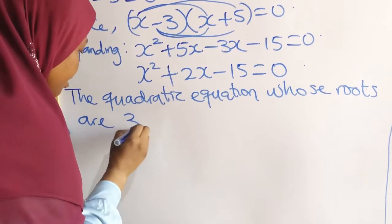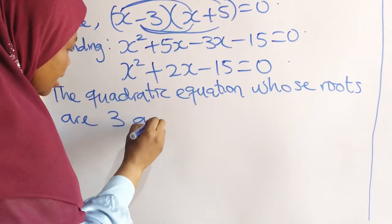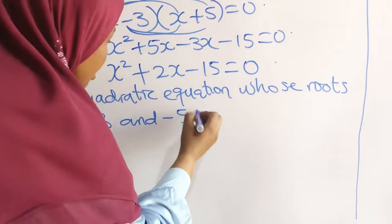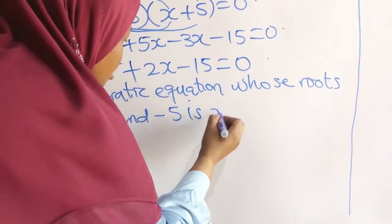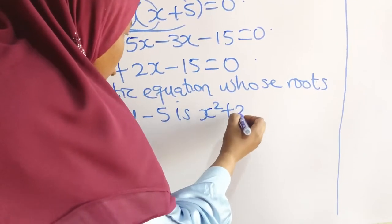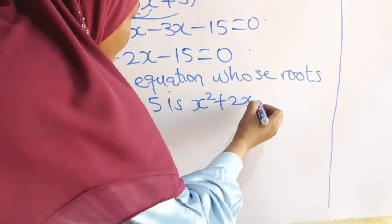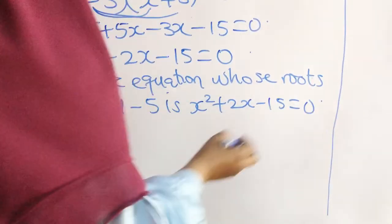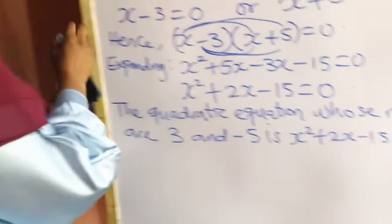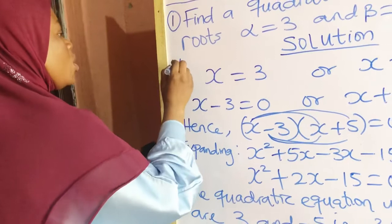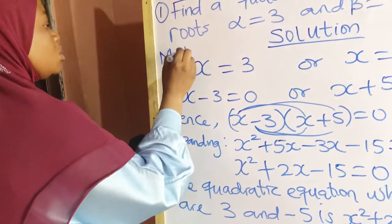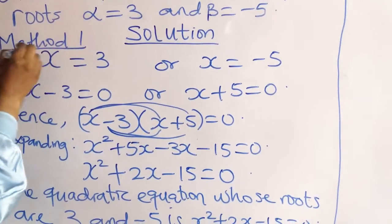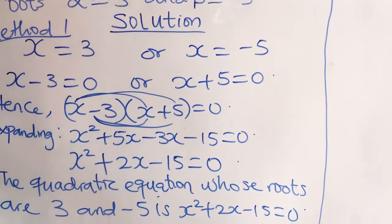The quadratic equation whose roots are 3 and minus 5 is x squared plus 2x minus 15 is equal to 0. That is Method 1. We want to use two methods, and here is the first method.